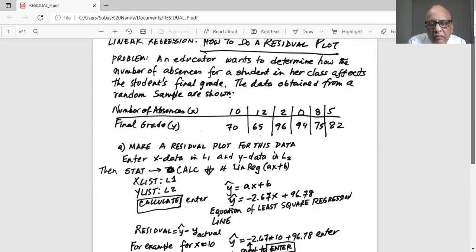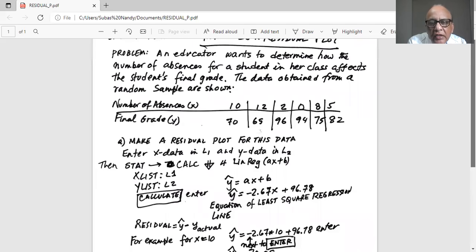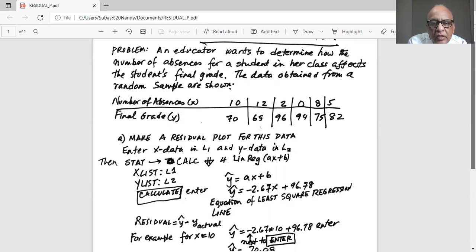Then we press the STAT button and highlight CALC on the top row and then scroll down to number four, which is linreg AX plus B function. And in that function, the first line is XLIST, which is L1, YLIST is L2, and we scroll down to calculate without changing anything else. And we hit enter.